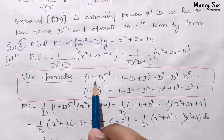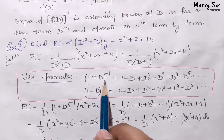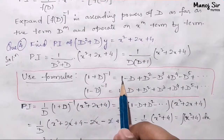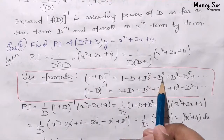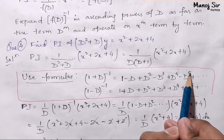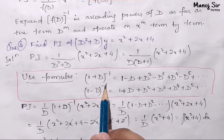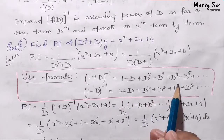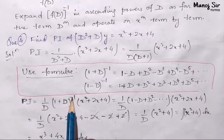We are going to use two formulae. If it is (1 + D) to the power minus 1, the expansion is: 1 minus D plus D² minus D³ plus D⁴ minus D⁵ and so on. If it is (1 minus D) to the power minus 1, the expansion is: 1 plus D plus D² plus D³ plus D⁴ plus D⁵ and so on. Here it is (1 + D) to the power minus 1, so we use the first formula.